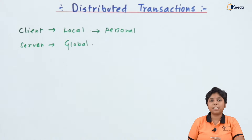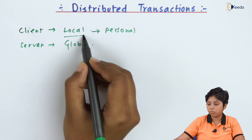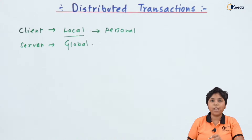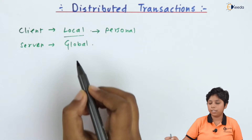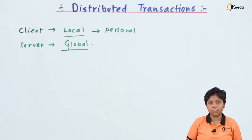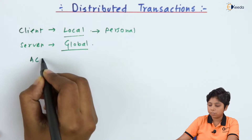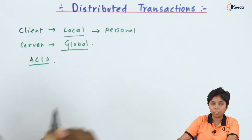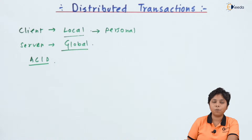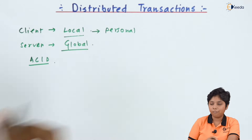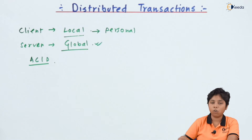When any machine updates a local database, those transactions are local transactions, and when they operate across the network they become global transactions. To ensure the ACID properties — atomicity, consistency, isolation and durability — global and local transactions need to be managed so that global transactions are always given preference over local transactions.